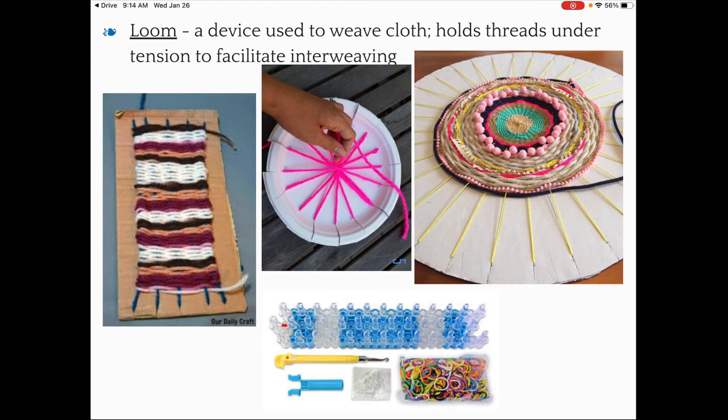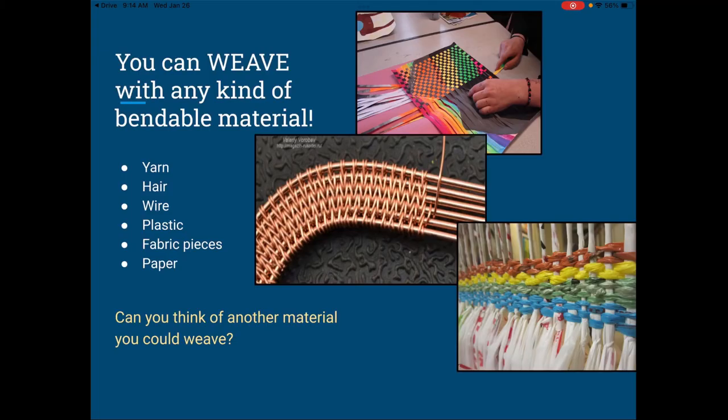Here are more types of looms — notice the rainbow loom at the bottom of the screen. On the left is one very similar to what you guys are going to use, made of cardboard. You can even use a paper plate as a loom — I do have some examples of paper plate looms here in the classroom — or a round piece of cardboard. The main thing is that the loom holds the threads under tension so you're able to create the weaving.